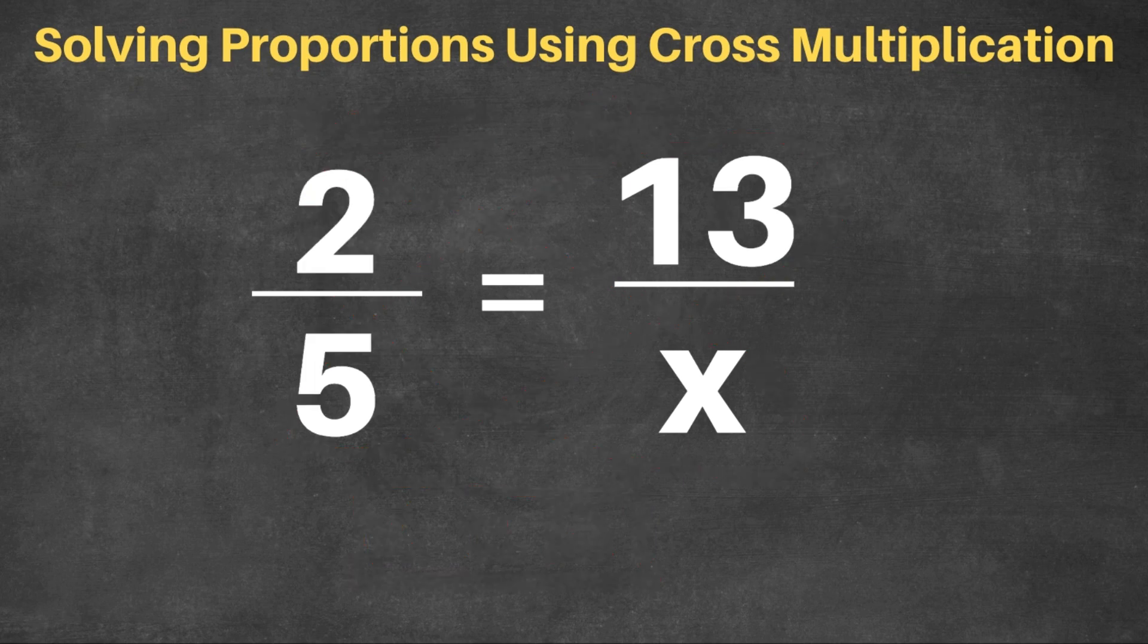All right. So now we have the problem 2 over 5 equals 13 over x. And we're simply going to use cross multiplication to solve this problem. So we're going to do 2 times x as well as 13 times 5. So we just multiply the two crossing terms, the two diagonal terms in the proportion.